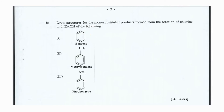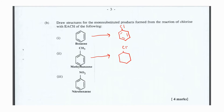Now let's look at question one b. We have some derivatives of benzene and we're going to react each with chlorine and provide the structure we would get. When we react methylbenzene with chlorine we get one chloromethylbenzene, in which one of the hydrogens in the methyl group is substituted by chlorine. Note that since it does not say excess chlorine, we stop at one chloromethylbenzene. With excess chlorine we could substitute all hydrogens to form CCl₃.